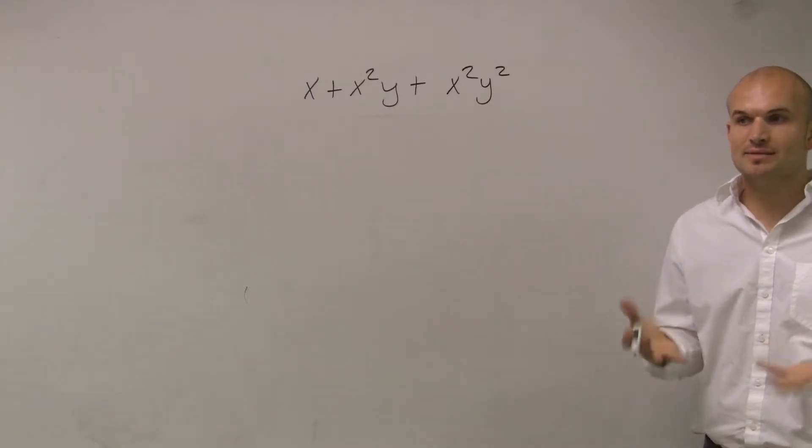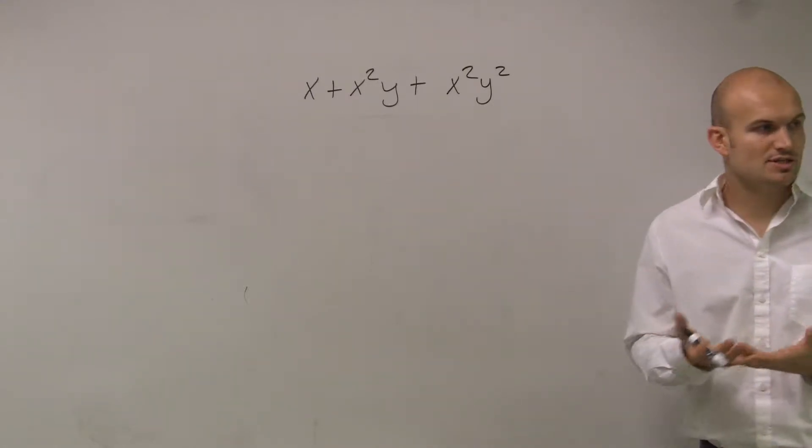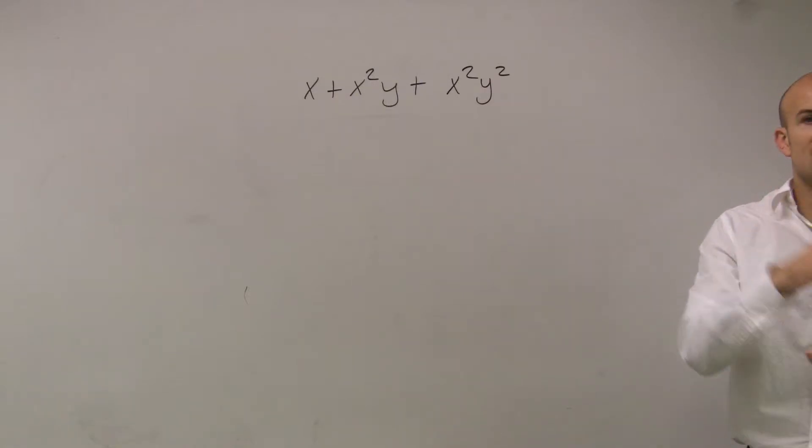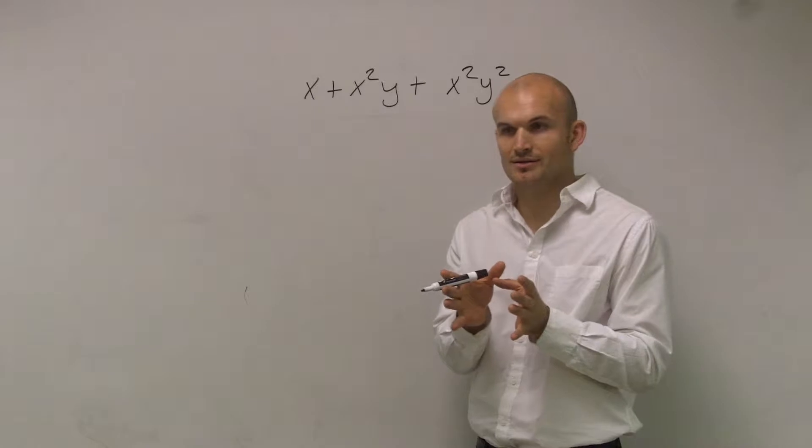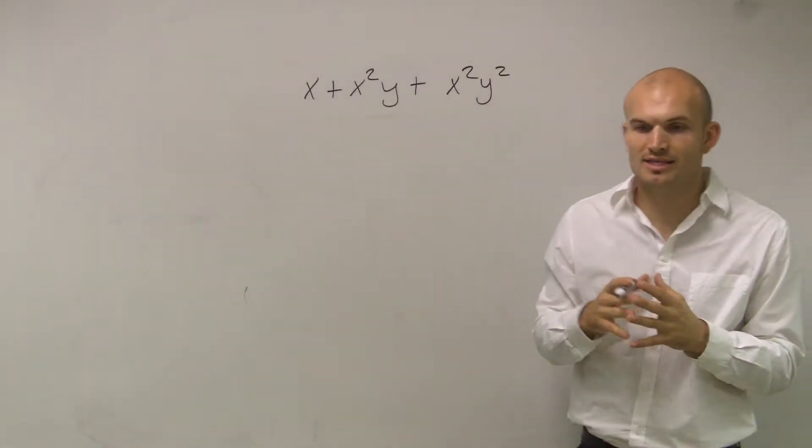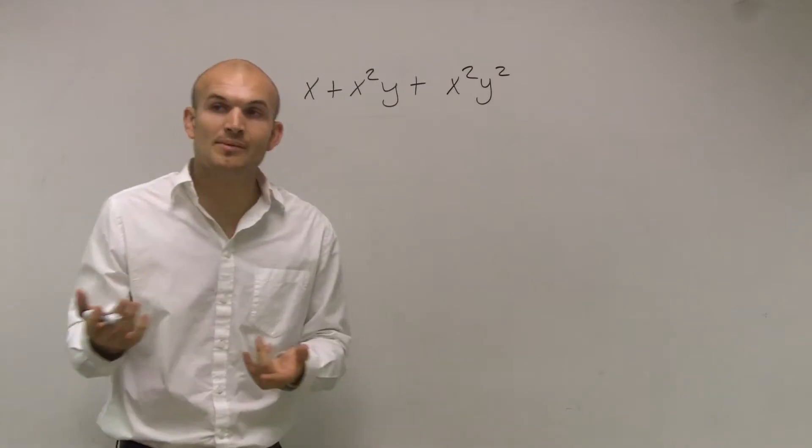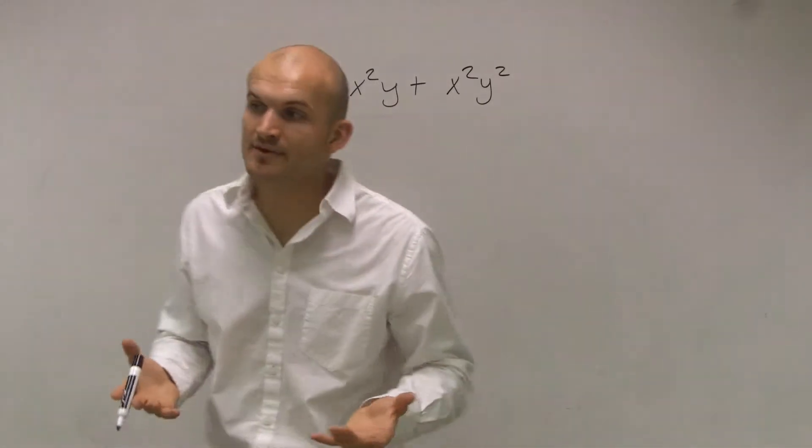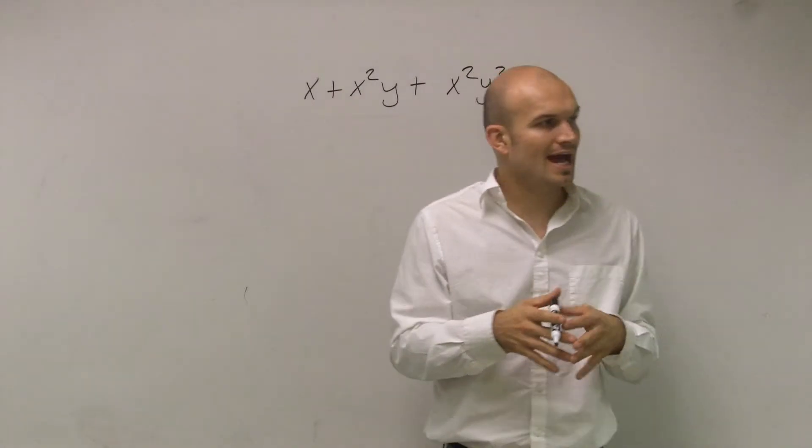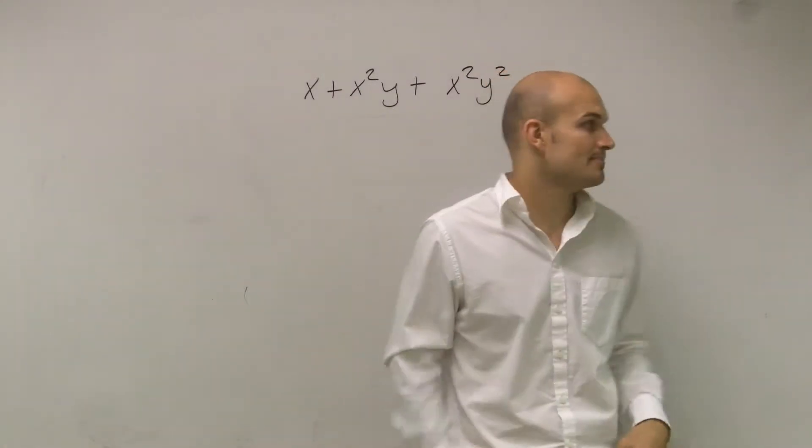So to write something as a product, what we can do is if we can find something that we can divide out, that remainder of it is going to give you your other factor that you can multiply by. We want to make sure we multiply by the greatest common factor, so therefore we're going to have two prime factors when we multiply them.